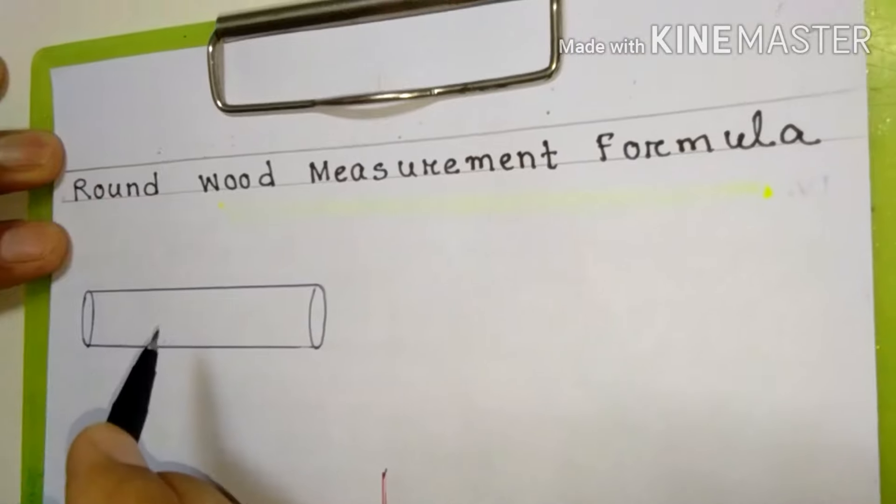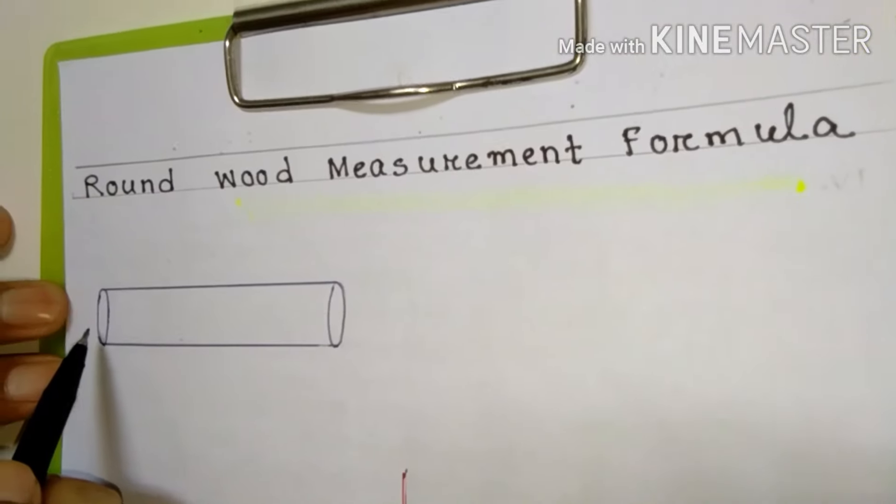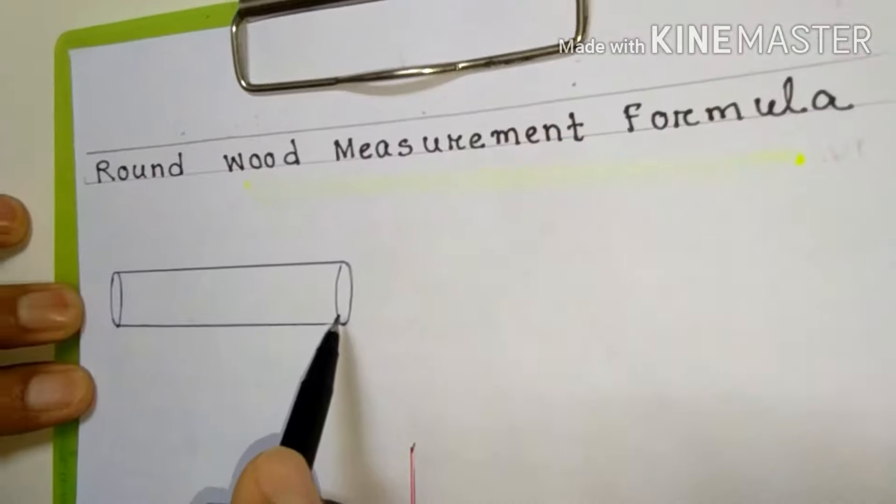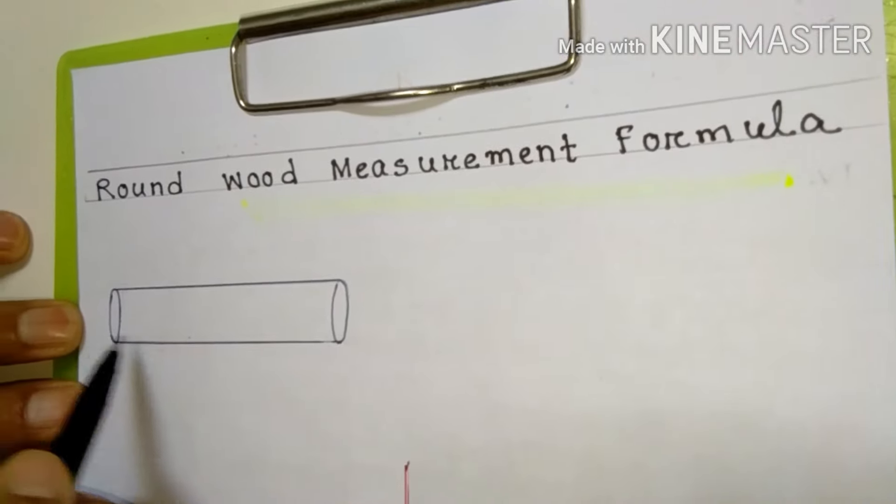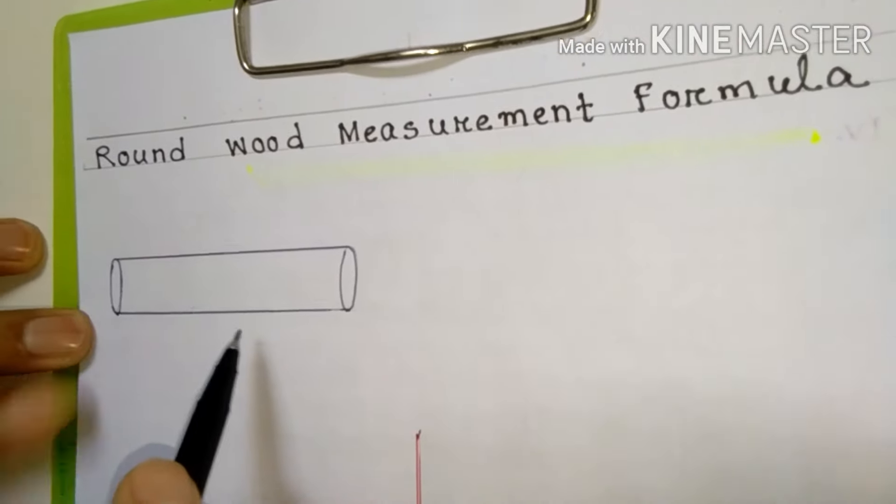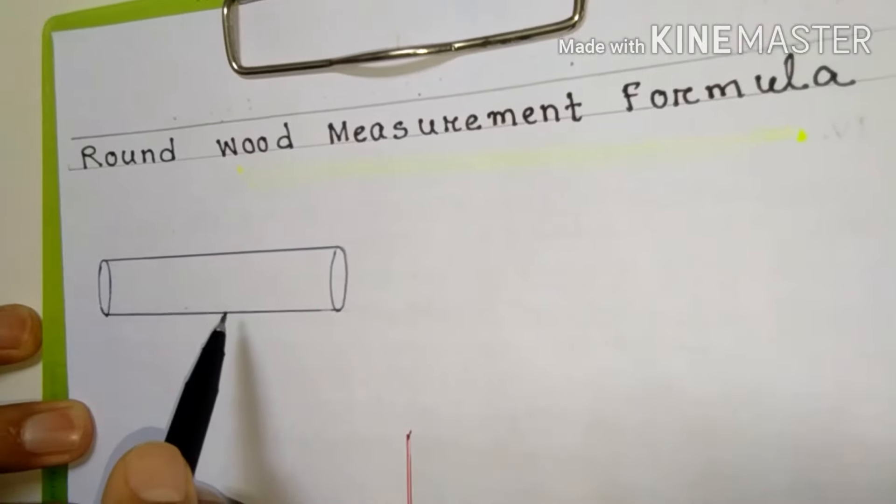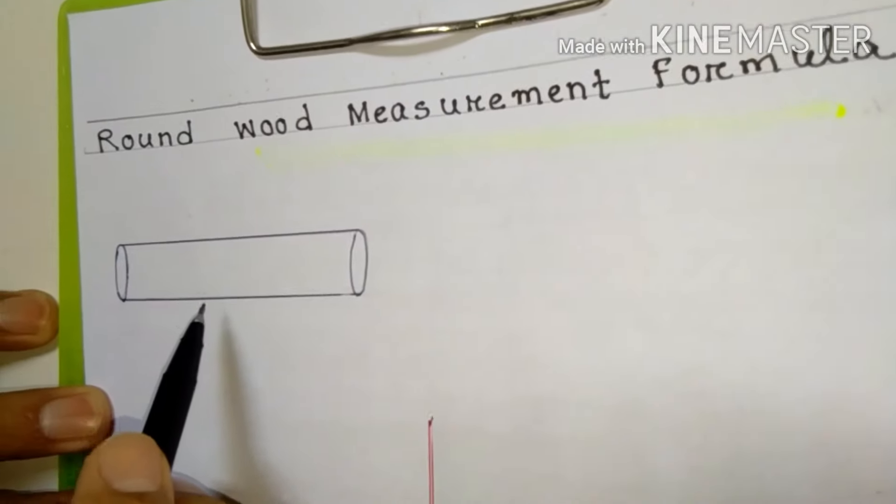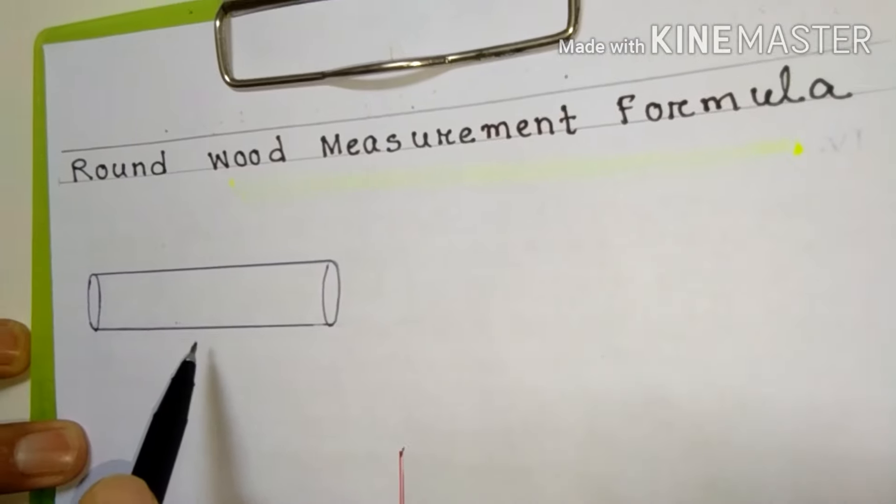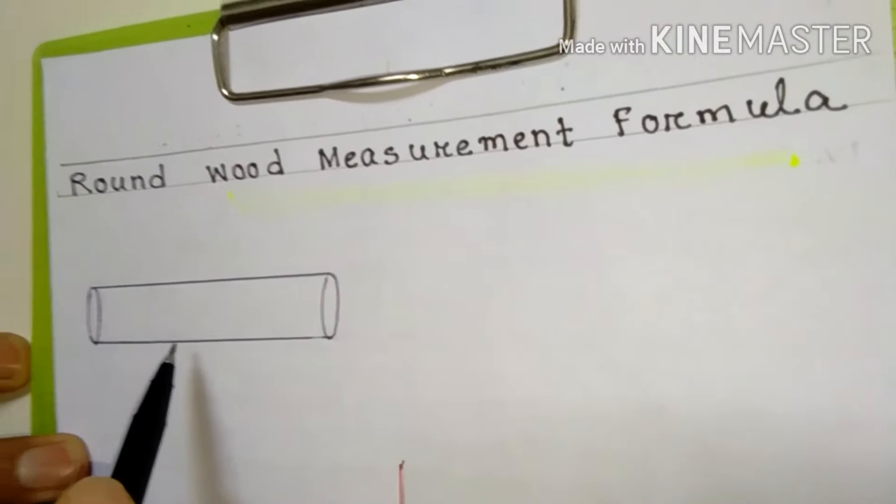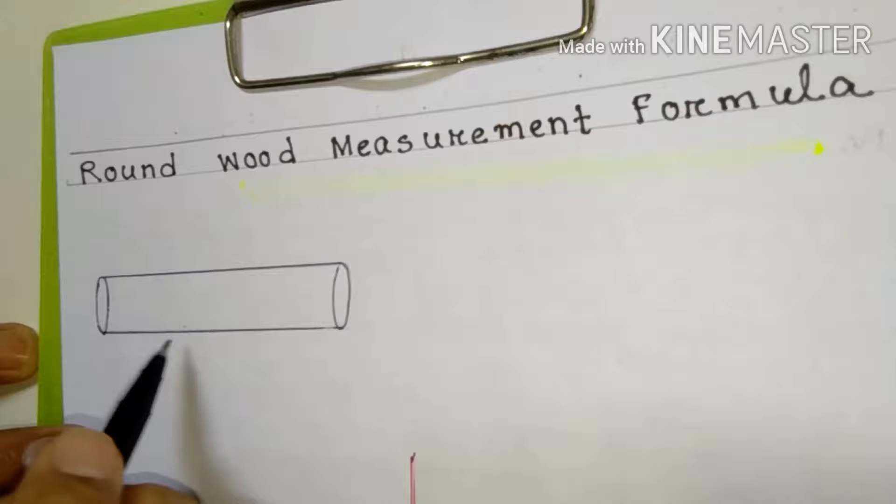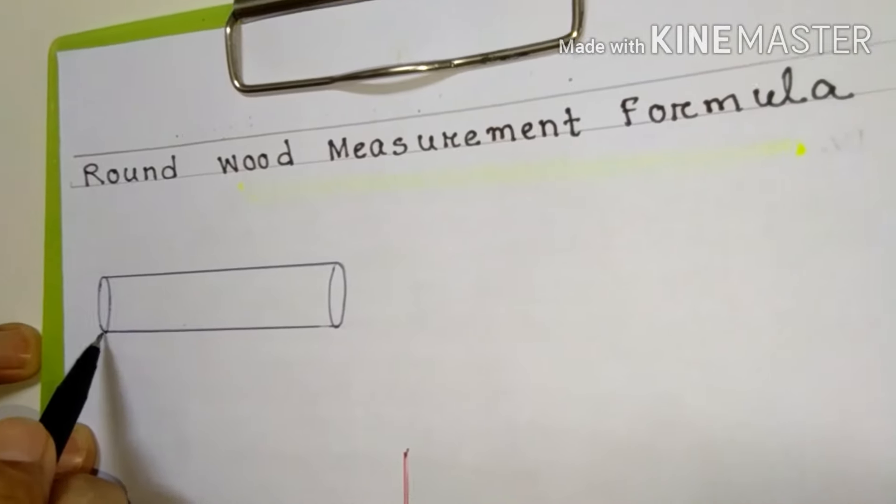Dear friends, today let us learn to find out the volume of a round wooden log. You can see this is a piece of wood cut out from a tree. We can find here length and circumference.